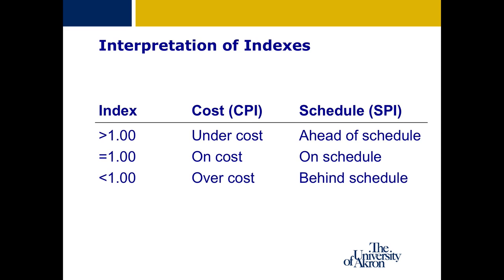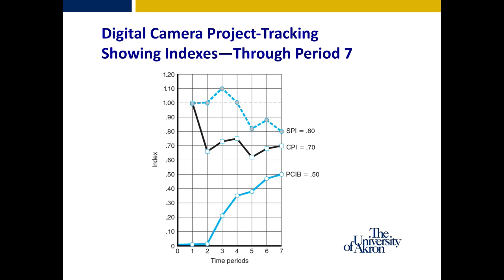For many index values, a value of 1 shows that a project is on track — whether by schedule or cost. A value under 1 shows the project is over budget or behind schedule, and a value over 1 shows costs are under budget or the project is ahead of schedule. A graph showing project progress through reporting period 7 indicates the project is behind schedule with an SPI of 0.8 and over budget with a CPI of 0.7. The PCIB shows the project is 50% through the planned budget (BAC), as the project was originally scheduled for 14 reporting periods.